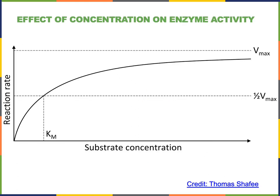Increasing the concentration of substrate will lead to an increased rate of the chemical reaction catalyzed by an enzyme, until we reach saturation. The maximum velocity, or Vmax, occurs when all of the enzyme in solution is saturated with substrate, and therefore the chemical reaction will not accelerate if we increase the substrate concentration further. The only way to create a further increase in reaction rate would be to increase the concentration of enzyme.